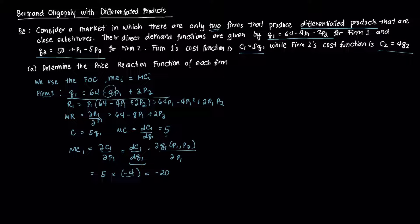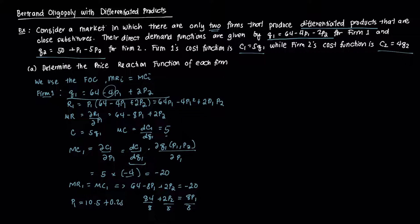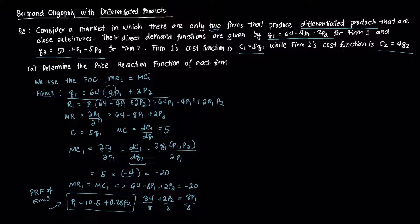Setting MR1 = MC1: 64 − 8P1 + 2P2 = −20. Isolating P1: 8P1 = 84 + 2P2, so dividing by 8 gives P1 = 10.5 + 0.25P2. This is the price reaction function of firm 1.